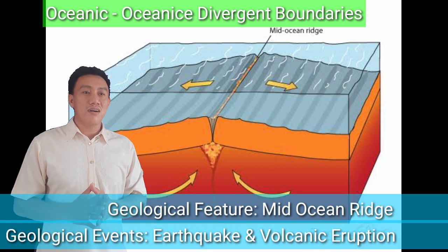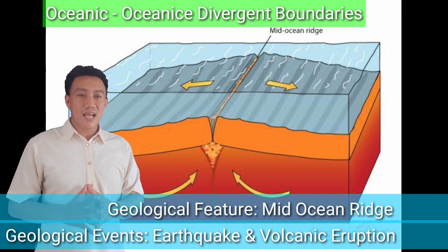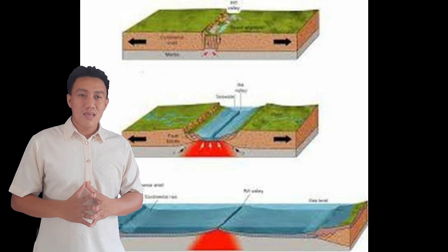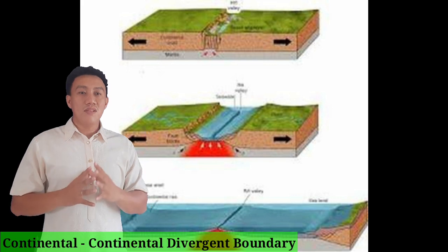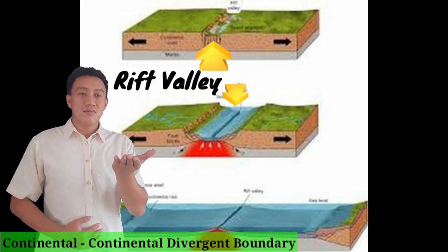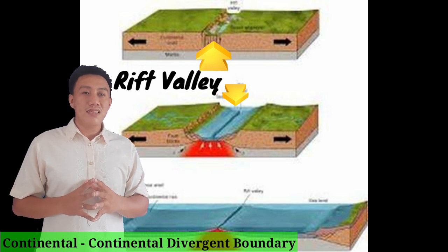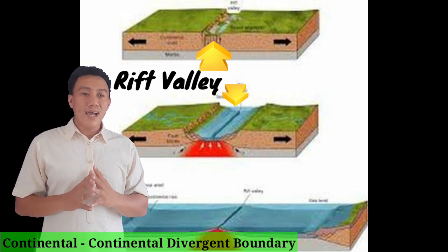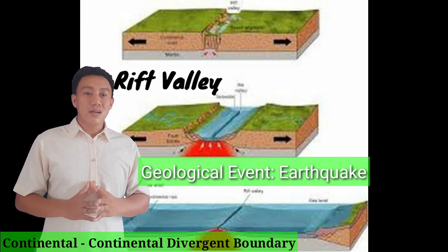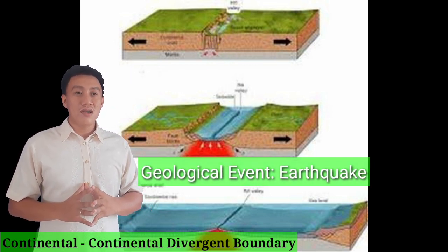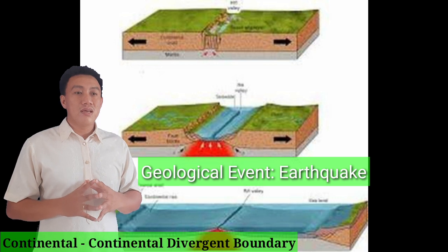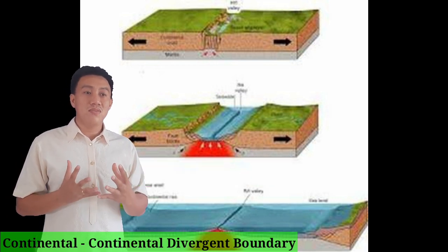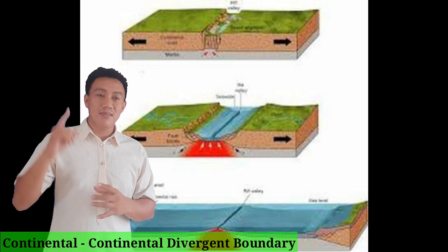The geological events of oceanic plate divergence are earthquake and volcanic activity, or what we call undersea volcanic eruption. In the diverging of two continental plates, when they separate, it will form a rift valley. This is the geological feature that may develop in this process, while the geological event is earthquake. Earthquake occurs as a result of the fracture and movement, producing a narrow, shallow sea within the rift. This rift can grow deeper and wider.